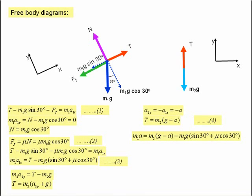And now substituting equation 4 into equation 3, we get that M1a is equal to M2 times g minus a, minus M1g times sin 30 plus mu cos 30.